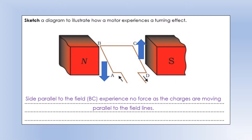The external magnetic field lines go from left to right, from north to south. Side BC is parallel to that, which means the charges moving through that wire are moving parallel to the field, so there'll be no force on side BC at all.